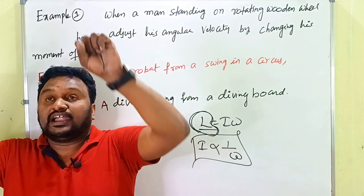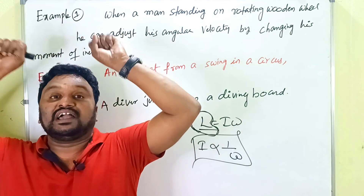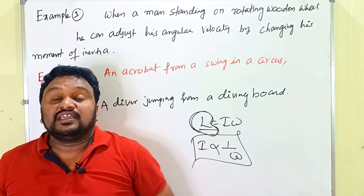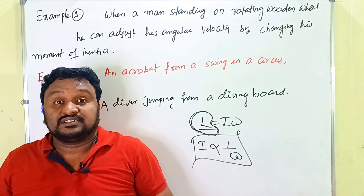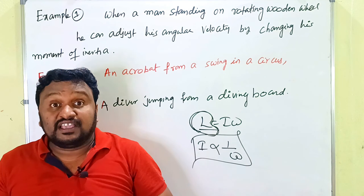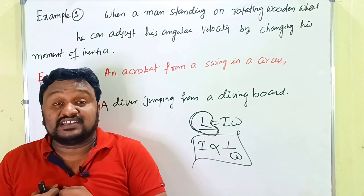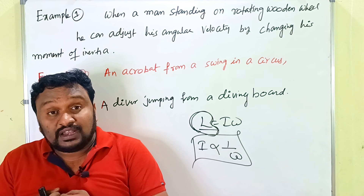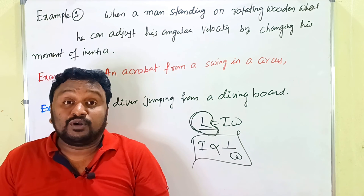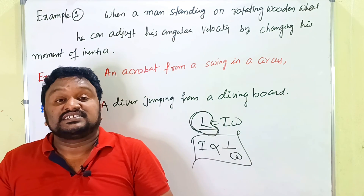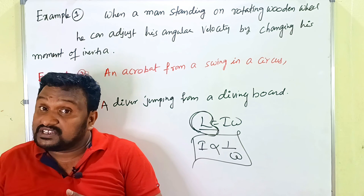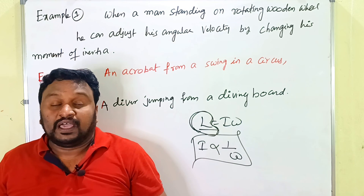The second example is an acrobat in a circus. The acrobat swings on a swing with some angular momentum. When he leaves the swing, he initially stretches his hands and legs to reduce velocity. While in the air, he folds his hands and legs to decrease moment of inertia and increase angular velocity. Before touching the ground again, he stretches his hands and legs to increase moment of inertia and decrease angular velocity.